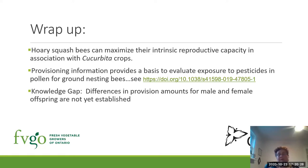There is a knowledge gap that needs to be filled: at present, we don't know the difference in provisioning amounts for male and female offspring. We do know, however, that females are much larger than males, and so we would expect female provisioning cells to have much more pollen in them than male provisioning cells.